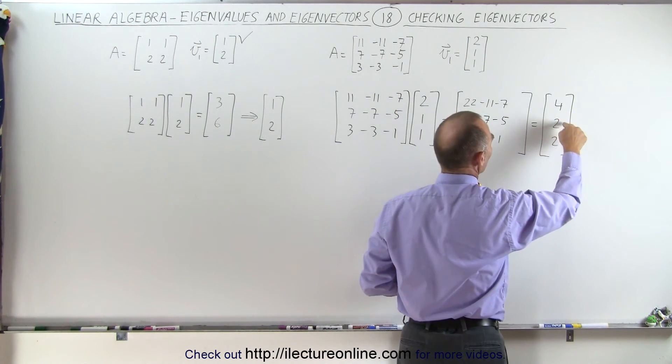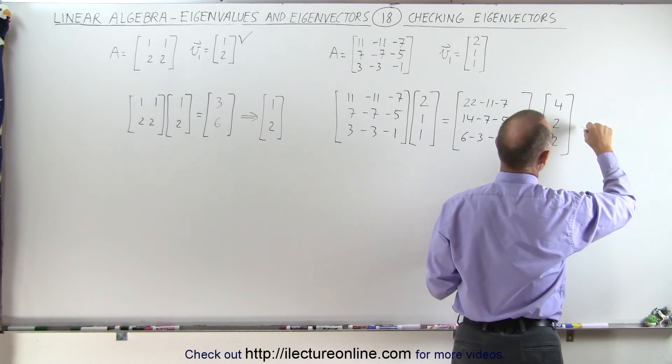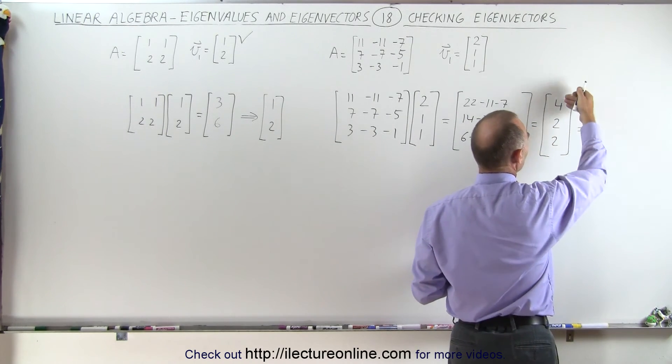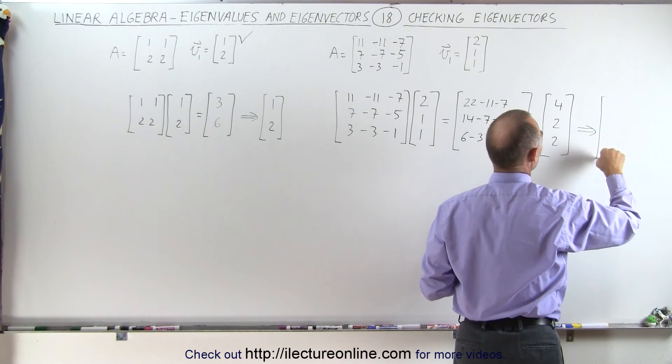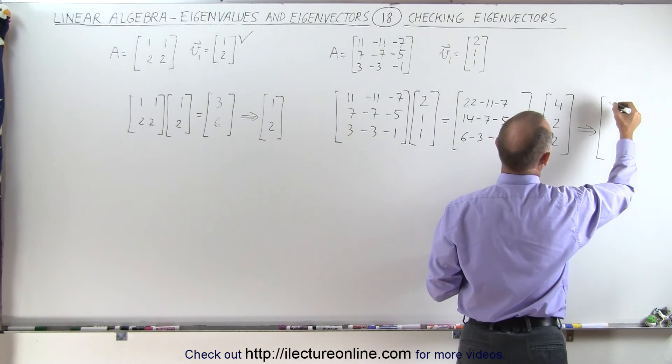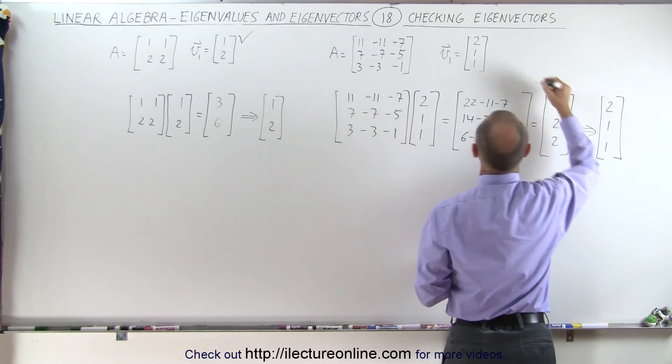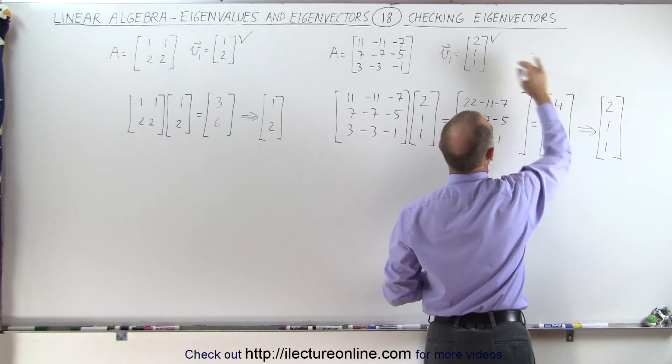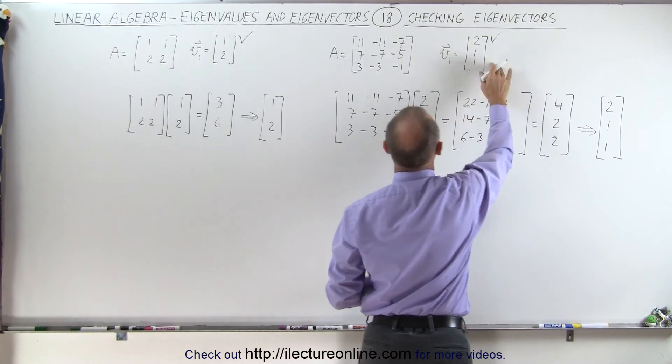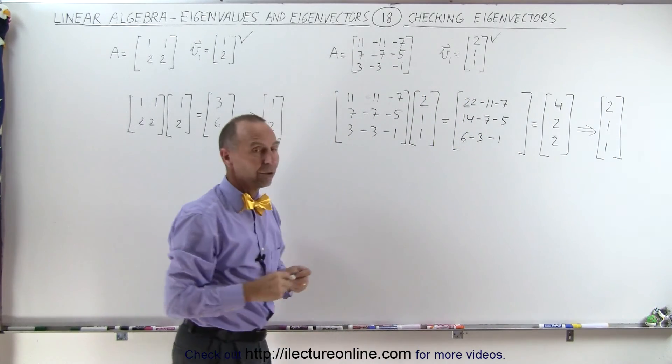x is twice as big as y, y is equal to z, which means that this could again be reduced by dividing all of the elements by 2 or all the values for x, y and z by 2. We get 2, 1 and 1, which means that yes, since that's equal to this, we know that this is a legitimate eigenvector for this particular matrix.